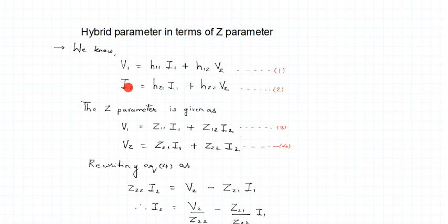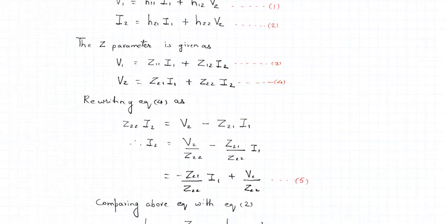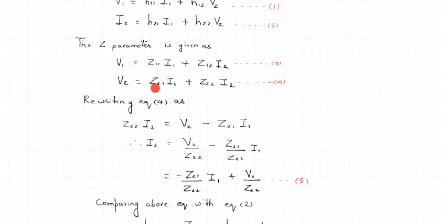Similar current and voltage parameters are identified in equation 2 and equation 4, and therefore equation 4 can be rearranged. Equation 4 is rearranged to express I2 in terms of I1 and V2, so that we get a very close match with equation 2. We want I2 in terms of I1 and V2, so we rearrange equation 4 accordingly. Z22·I2 is placed on the left-hand side with the rest of the elements on the right.